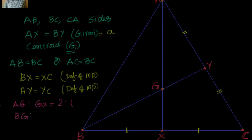Similarly, BG is to GY is equal to 2 is to 1. With that, what we can do? We can go ahead and find out the values of AG. AG is nothing but equal to 2 by 3 into A and GX equal to A by 3. And BG equal to again 2A by 3 and GY equal to A by 3.